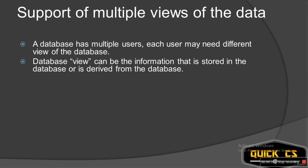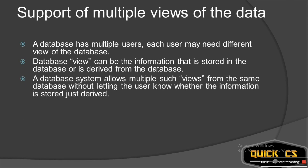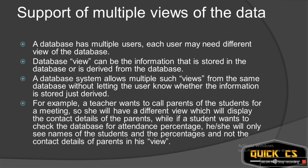Another thing to understand is that in a view, the information shown is either derived from the database or stored in the database. For example, suppose a teacher wants to find the average score of the entire class out of 100. She will query the database for the average score of the students and get the result. The teacher does not know whether that average score is stored in the database or is calculated by the database and then displayed. That is what is known as support of multiple views of the data — different users have different views based on their privileges.